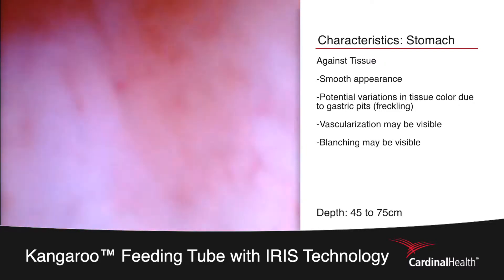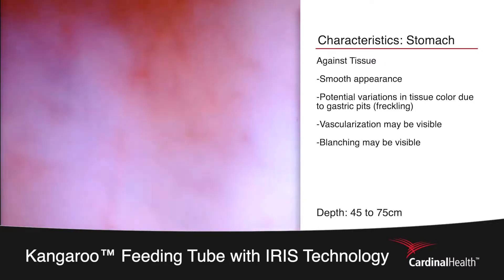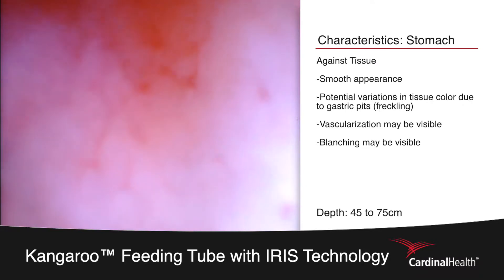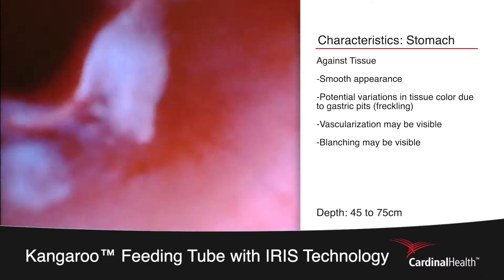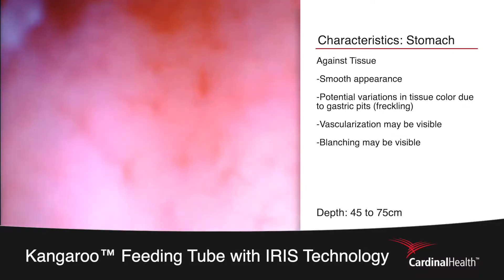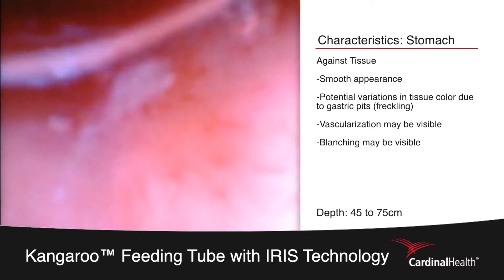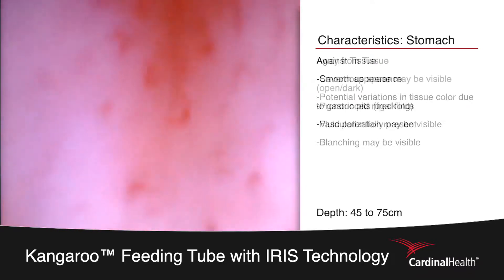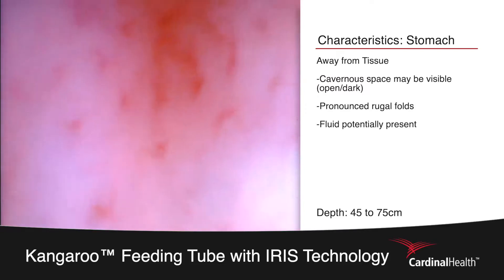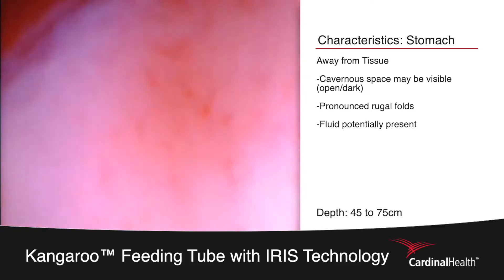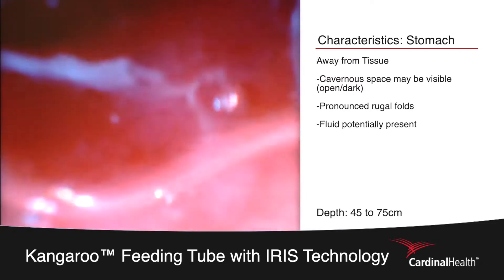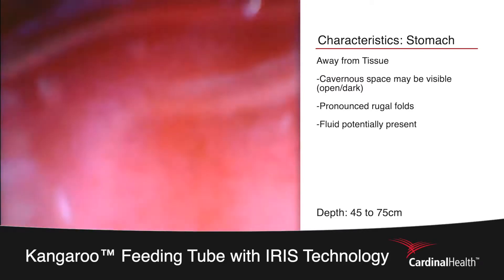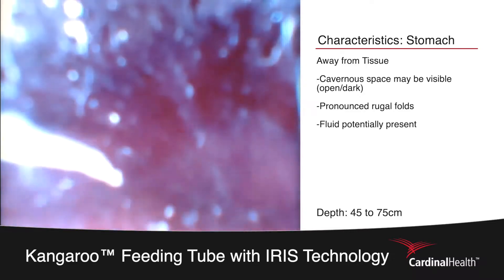In order to visualize a larger view of the stomach, you can retract the tube away from the lining of the stomach, or add air utilizing the insufflation device. This will allow you to visualize the large, regular rugal folds, as well as the dark cavernous nature of the stomach.